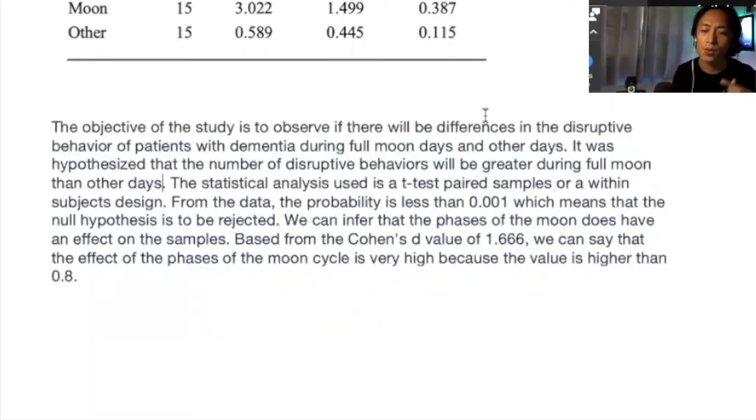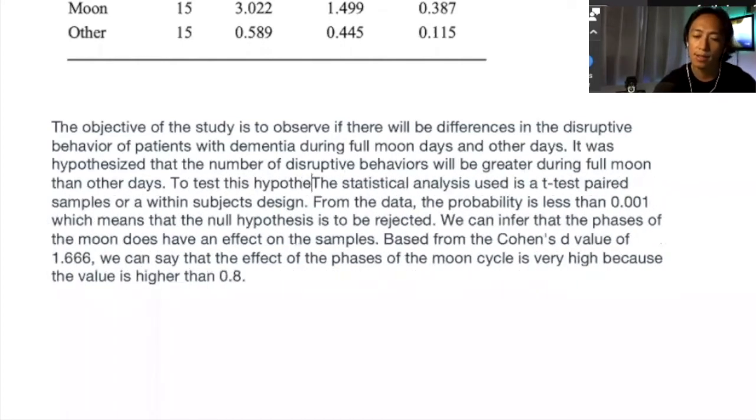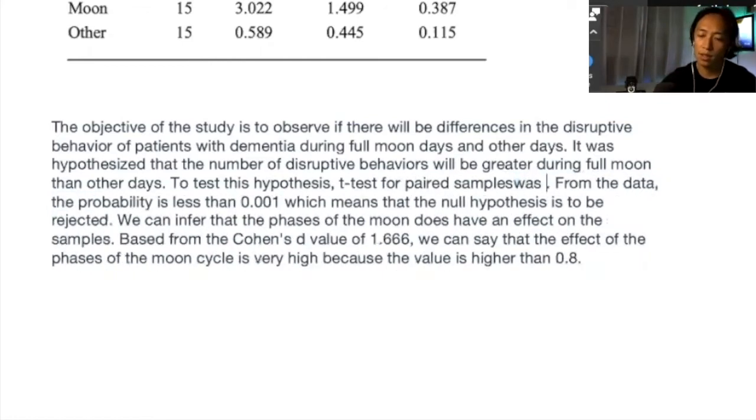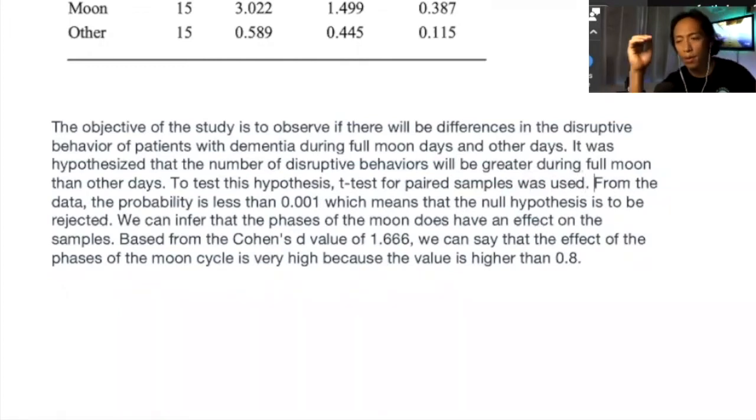Next, the statistical analysis used is a T-test paired samples or within subjects design. So again, try to avoid using the word or just give it to them straight. Maybe we can improve it by being more casual about it. So you can say, to test this hypothesis, T-test for paired samples was used. So maybe that's a more straightforward of saying it. The only problem I have with my statement is that it's in passive voice, which is discouraged in academic writing. So as much as possible, we want our sentences to be active.